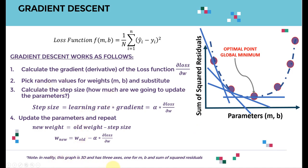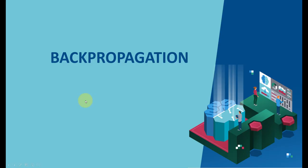Note that in reality this graph is 3D — three axes: one for m, one for b, and one for the sum of squared residuals. To summarize gradient descent: formulate a loss function, calculate its gradient, pick random values and substitute, calculate the step size (learning rate × gradient), update the parameters by subtracting the step size from old weights, and repeat until reaching the global minimum. In the next lecture we'll cover back propagation. Please stay tuned and enjoy the course!